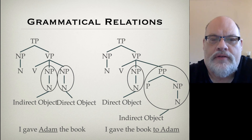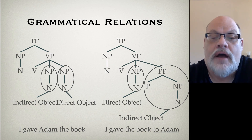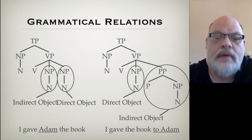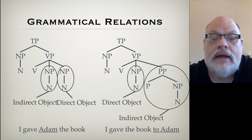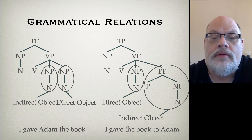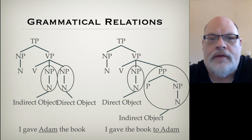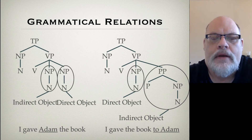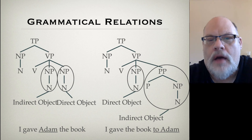So those are our grammatical relations. Subjects are the NP daughter of TP. Objects with transitive verbs are the NP daughter of VP. If you have a ditransitive, it becomes much more complicated: the direct object can be the second noun phrase when you have two NPs, or the first noun phrase if you have an NP and a PP. And the indirect object is the first NP when you have two noun phrases, or the PP when you don't have two noun phrases. And finally, the object of a preposition is the noun phrase that's dominated by a PP. So these are structural definitions of grammatical relations like subject, object, object of a preposition, and indirect object.